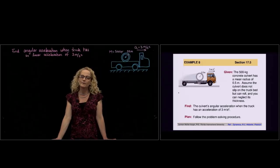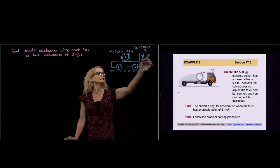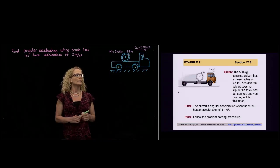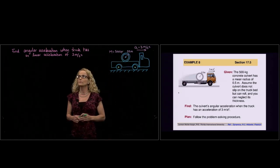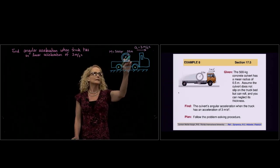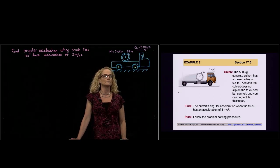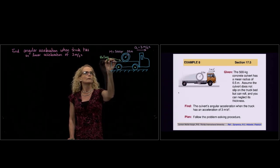This is example number 8 of section 17.5. We have a truck moving forward to the right with an acceleration of 3 meters per second squared, and a concrete cylinder on top of the truck. We are asked to find the angular acceleration of this cylinder when the truck has a linear acceleration of 3 meters per second squared, given that it is rolling without slip.